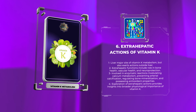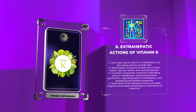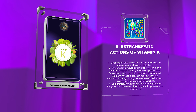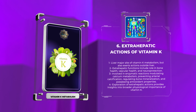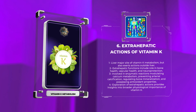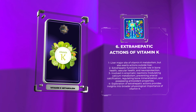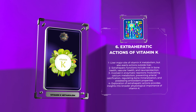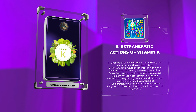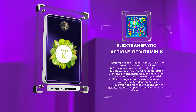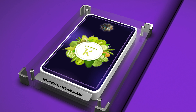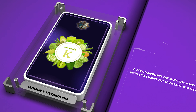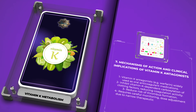The metabolism of vitamin K is tightly regulated to maintain optimal levels of active vitamin K for the synthesis of vitamin K-dependent proteins. Regulation occurs at various levels, including the synthesis, activation, and degradation of vitamin K. The synthesis of vitamin K is primarily regulated by dietary intake and intestinal bacterial synthesis. Activation of vitamin K involves the reduction reaction mediated by VKOR, while degradation occurs through enzyme-mediated processes. A comprehensive understanding of the regulatory mechanisms ensures the efficient utilization and maintenance of vitamin K in the body.